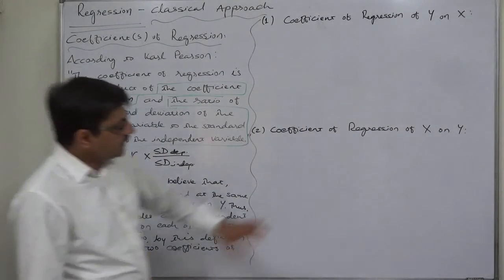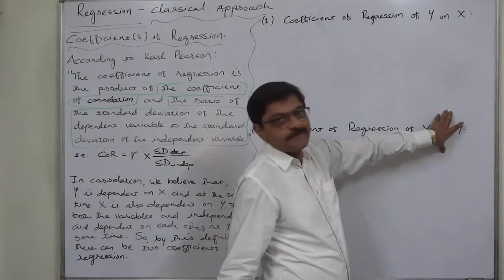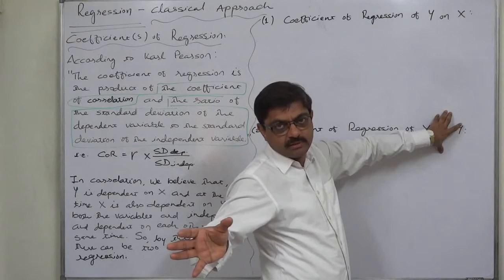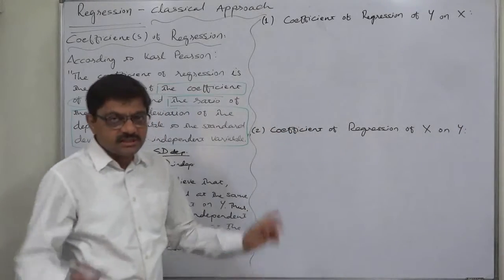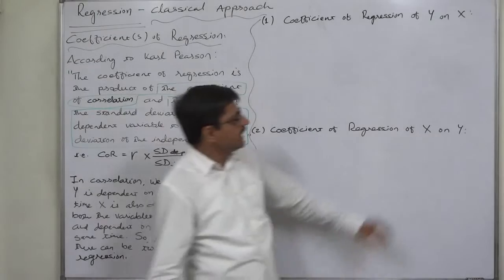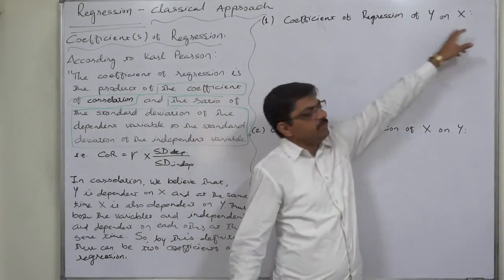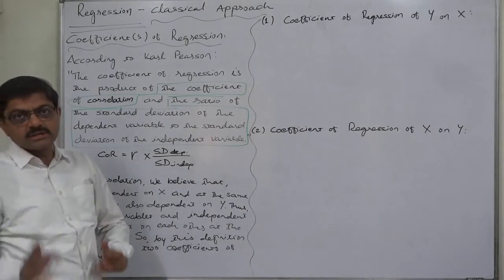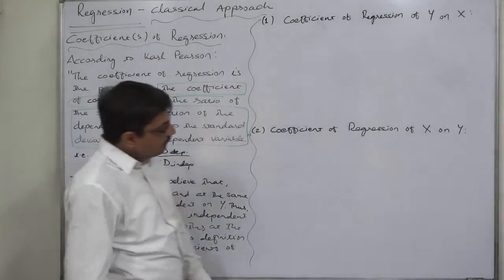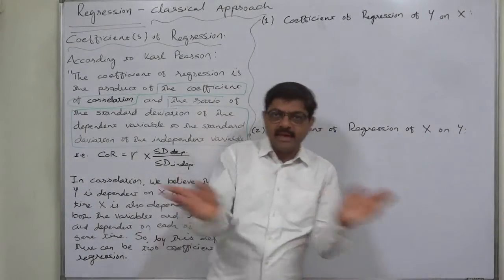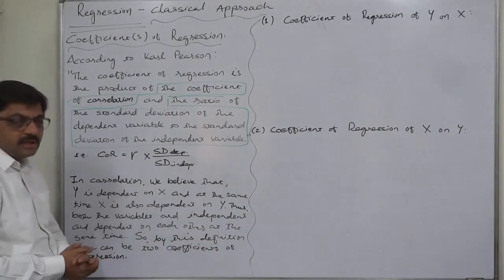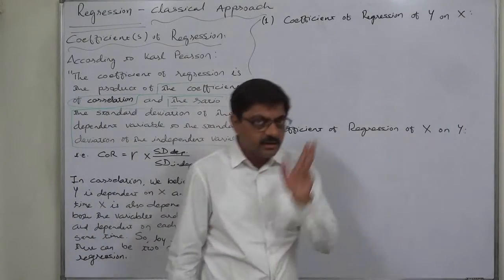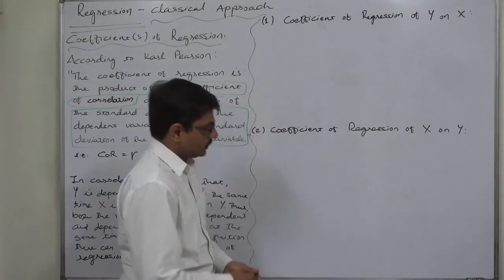Mind well, this concept is somewhat out of the box. Because in mathematics, since centuries, we believe that the dependent variable is always Y and the independent variable is always X. But in correlation and regression, we believe that at the same time X and Y both are independent and dependent on each other. That's why in linear regression, there are two coefficients of regression.